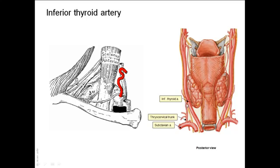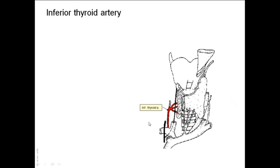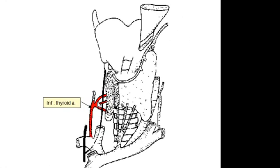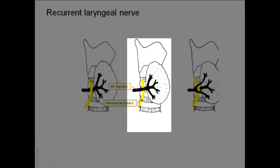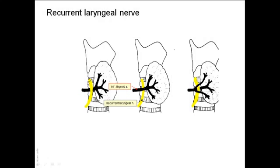The inferior thyroid artery bends above the lower pole of the thyroid gland — it does not enter at the lower pole. Before entering the gland and before passing into the pretracheal fascia, it divides into multiple branches. These branches are related to the recurrent laryngeal nerve located in the groove between the trachea and the esophagus. Usually the nerve passes deep to the vessels, but sometimes it is superficial to or passes between the arterial branches.